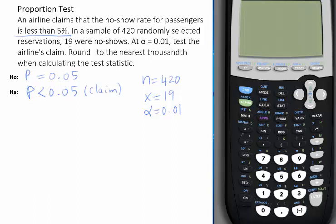In order to proceed to the calculator, we have to make sure that the requirements of the test are met, which you need to check that N times P times Q is greater than or equal to 10. N is 420, P is 0.05, and Q is 0.95, and if you multiply those three numbers, you're going to find out that it is greater than 10.